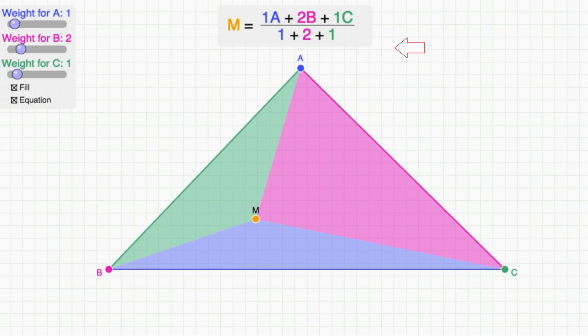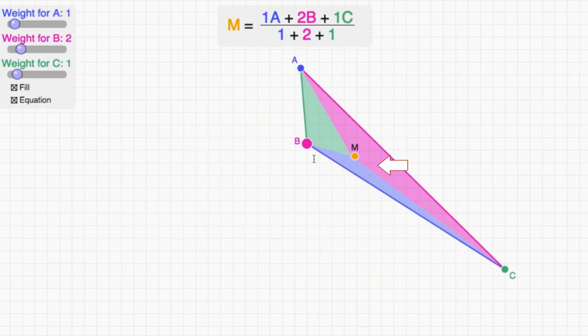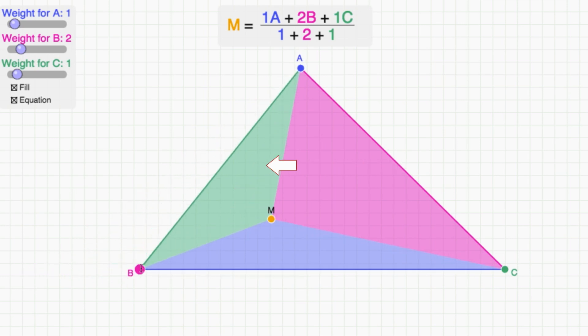The algebra is m equals a plus 2b plus c, and all of that divided by 4. The geometry says that the area of the triangle opposite of b is twice as big as the areas in the other two triangles.